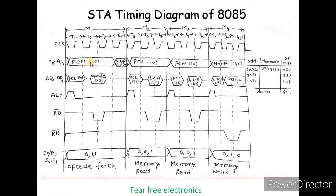A8 to A15 carry the higher-order address and AD0 to AD7 are multiplexed lines. When the ALE signal is high, AD0 to AD7 act as the lower-order address lines — so 20H is on A8-A15 and 80H is on AD0-AD7. When ALE goes low, AD0 to AD7 switch to act as data lines D0 to D7.